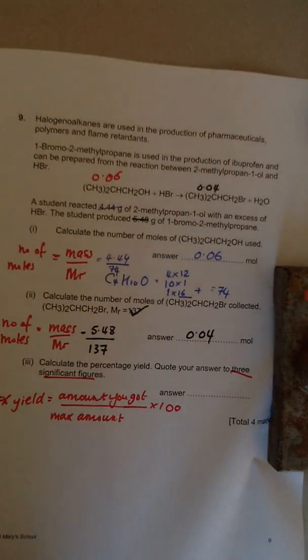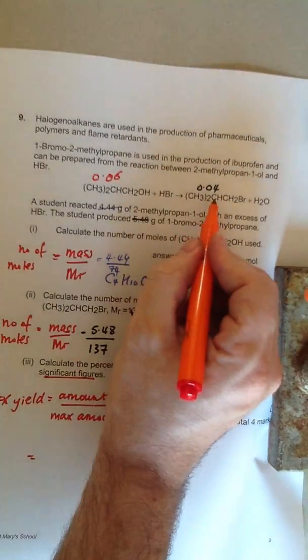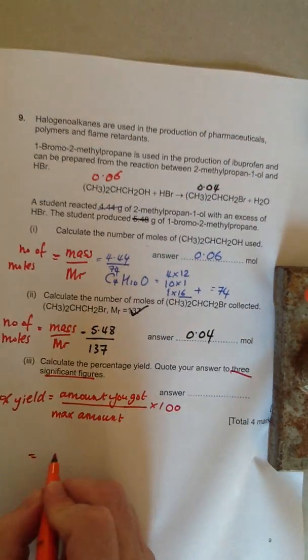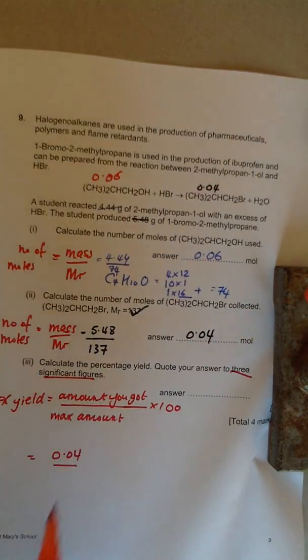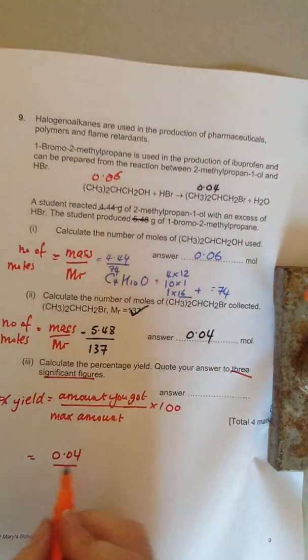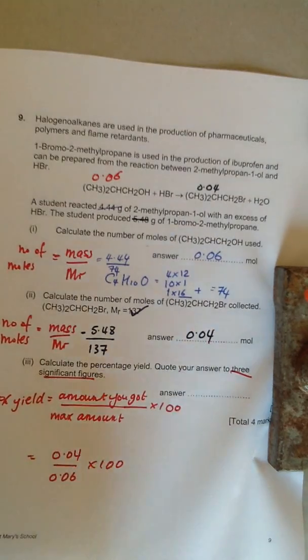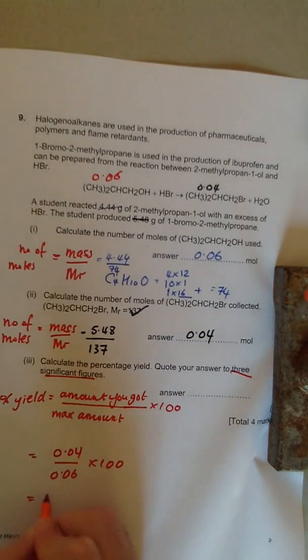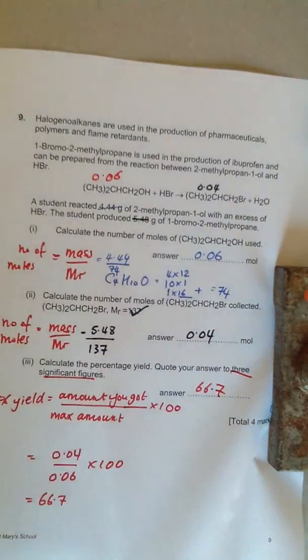We only ended up with 0.04 moles. So the amount we got of the halogenoalkane of the bromine compound is 0.04. The maximum amount we could have got if all that would have gone to completion, 0.06. Times by 100. And the amount you get is 66.7.